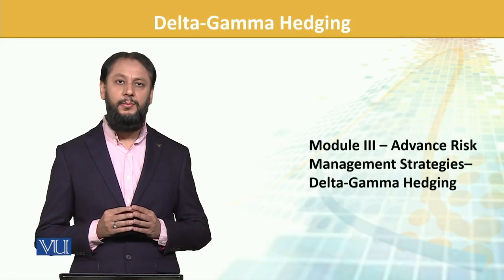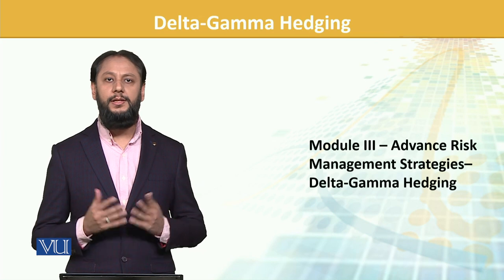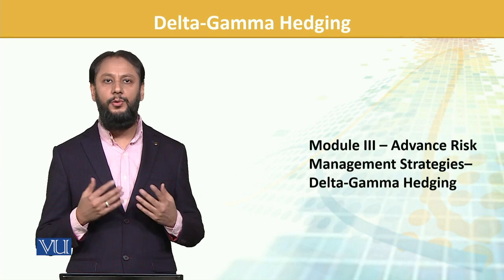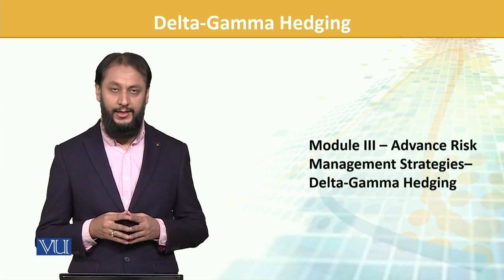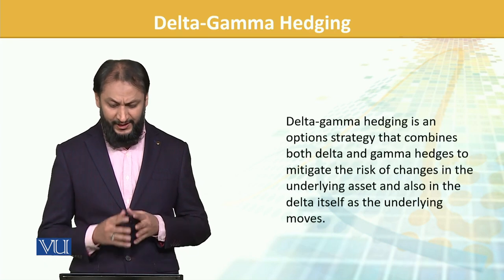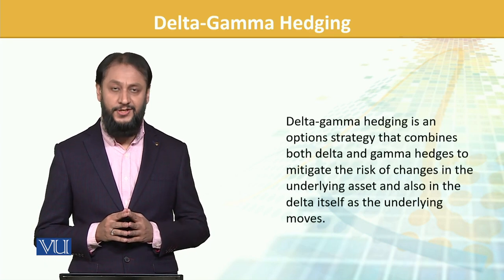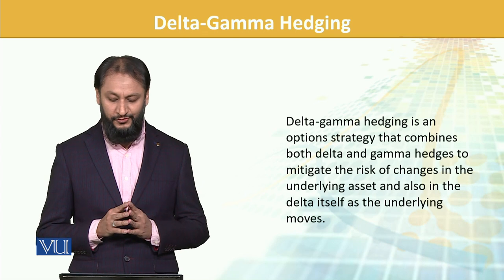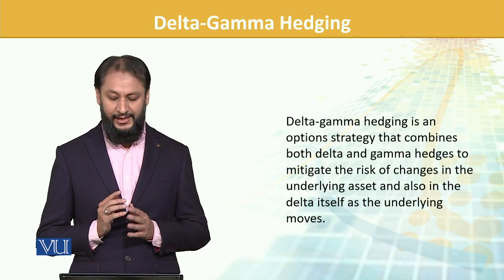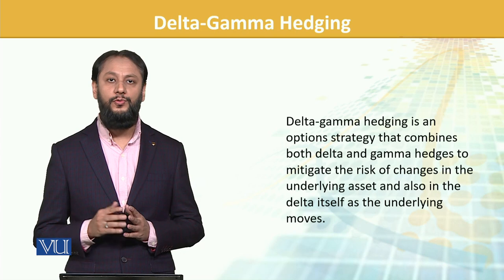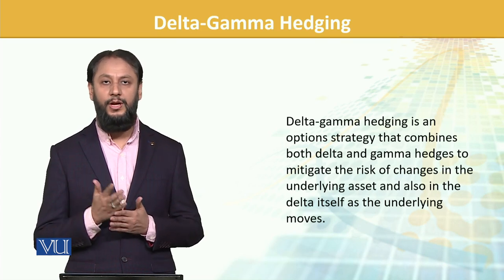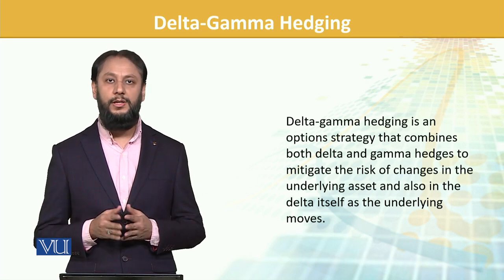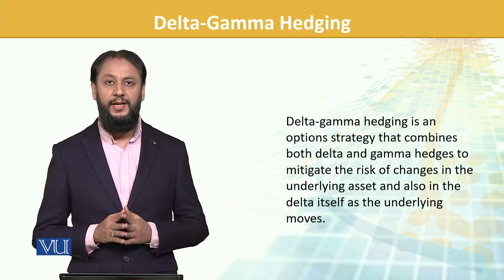In advanced risk management, we talked about what Delta is and what Gamma is. We will see how both strategies work, how they are linked, and how they are practically used. Delta-Gamma hedging is an option strategy that combines both Delta and Gamma to hedge and mitigate the risk of change in underlying assets and also in Delta itself as the underlying moves.